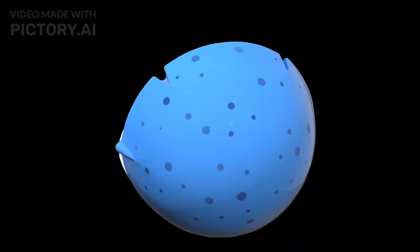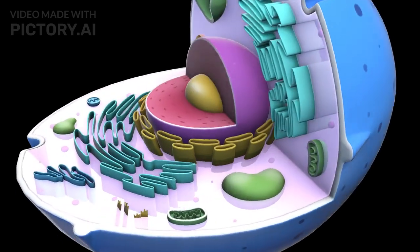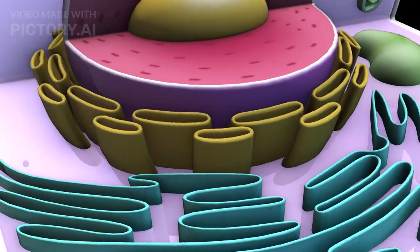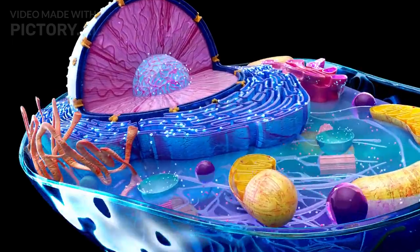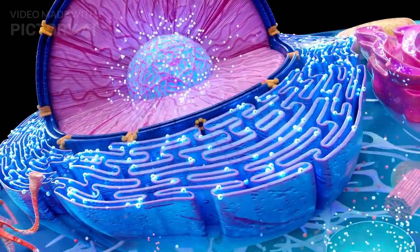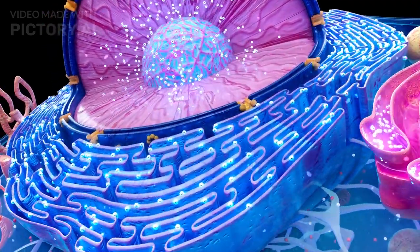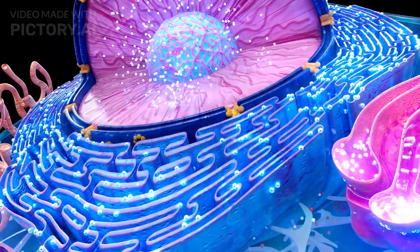Here we see the endoplasmic reticulum, or ER. The endoplasmic reticulum has rough ER on one side, studded with ribosomes, and smooth ER on the other, smooth and tubular. The rough ER, covered with ribosomes, is where proteins are synthesized. Meanwhile, the smooth ER plays a role in lipid production and detoxification.